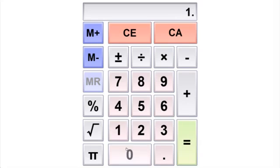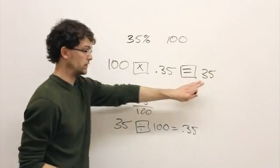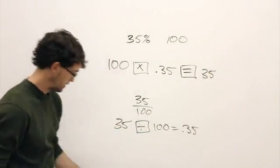So once you put 100 times 0.35 in your calculator and hit equals, you're going to get 35. 35 is 35% of 100.